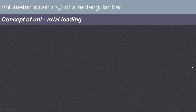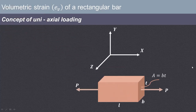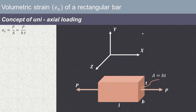Now let us understand uniaxial loading. When a load is applied in one direction, it is known as uniaxial loading. If force P acts along the X direction, with B along the Z axis and T along the Y axis, then sigma X equals force upon area, that is P upon B into T. Length is also along X direction — this is axial pull-type loading.